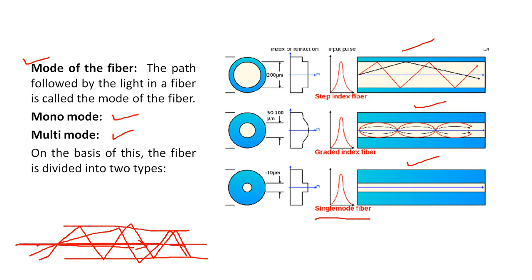The fiber is divided into two types: one is monomode fiber and the other is multimode fiber. The fiber is also divided into two types: step index fiber and graded index fiber. For the step index fiber, the diameter of the core is approximately 200 micrometers. For the graded index fiber, it is almost 100 micrometers. For the single mode fiber, it varies from 10 micrometers to almost 40–50 micrometers. Step index fiber is of two types — monomode fiber and multimode fiber — but graded index fiber is only of one type, that is multimode fiber.